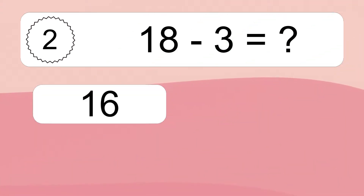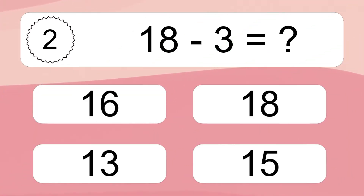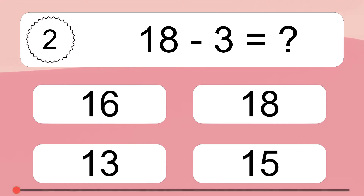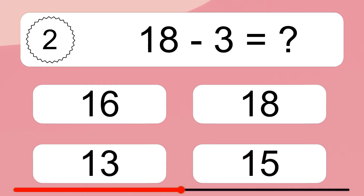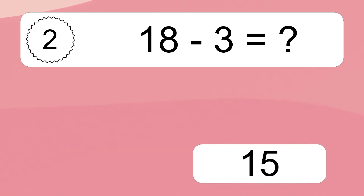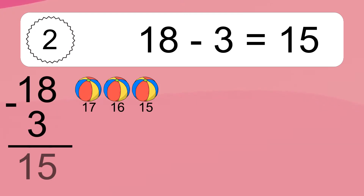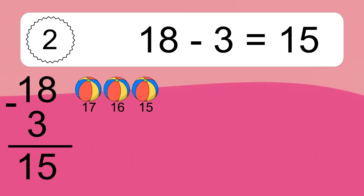18 minus 3 equals what? 18 minus 3 equals 15. Let's count it: 17, 16, 15.